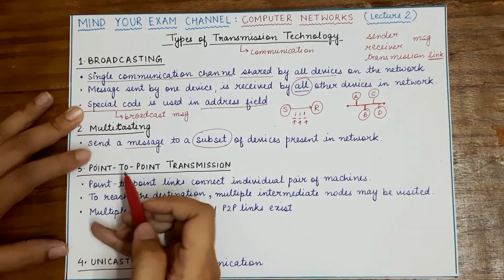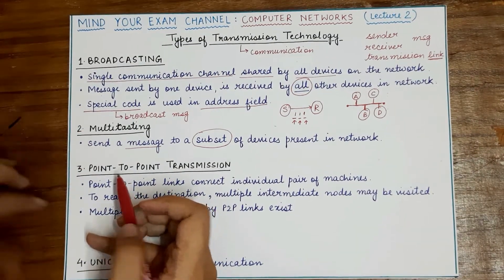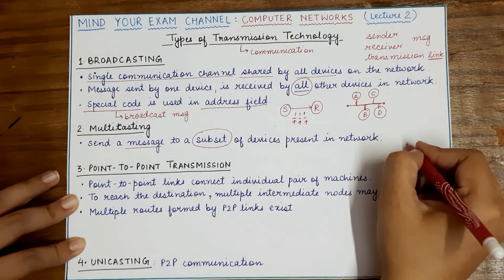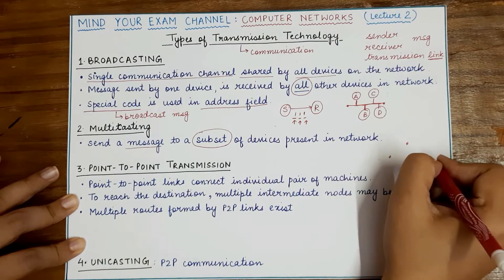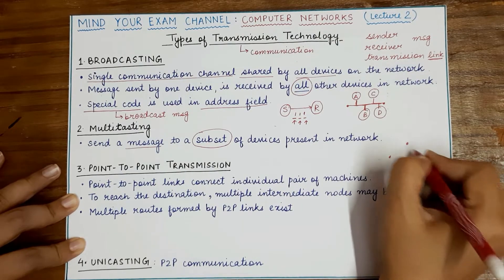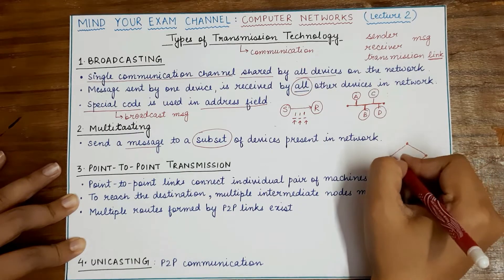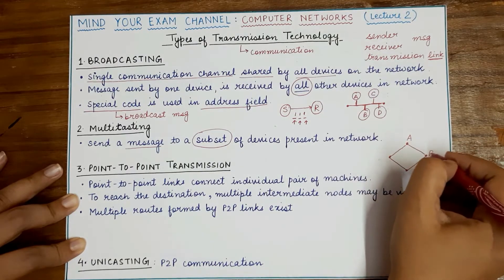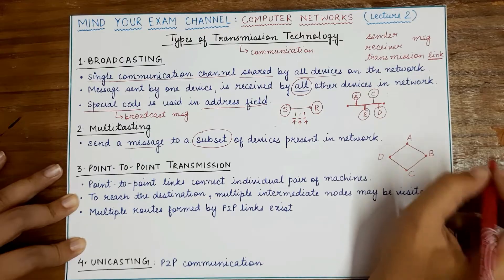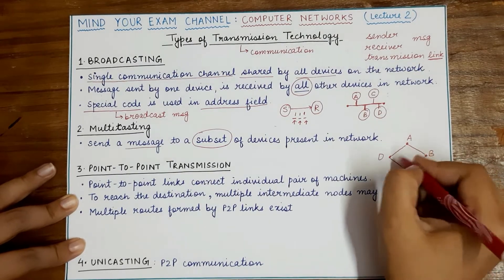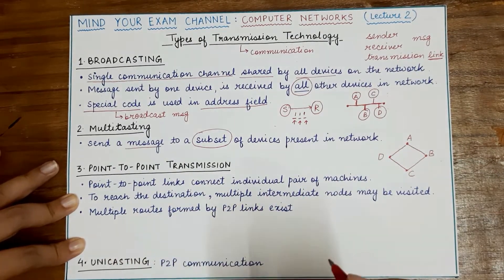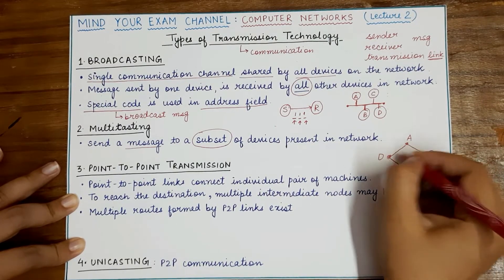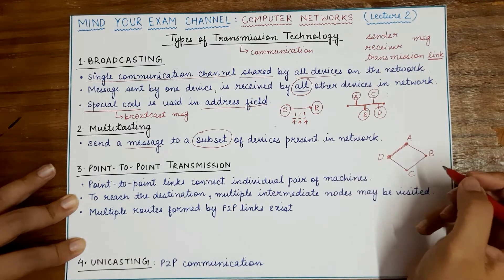The opposite of broadcasting is point-to-point transmission. You can imagine point-to-point transmission as direct individual links being present between multiple devices in a network. In case of point-to-point transmission, there is not a single shared channel. Rather, multiple links exist in the network and one link is present between each pair of devices.